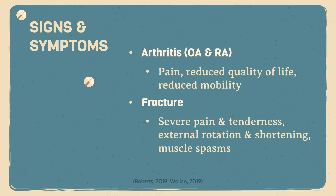The discussion of signs and symptoms is next. Both osteoarthritis and rheumatoid arthritis cause pain, reduced quality of life, and reduced mobility. Fractures usually present with severe pain and tenderness. Visual inspection of the limb will display an external rotation and shortening of the affected extremity. Muscle spasms are also common.